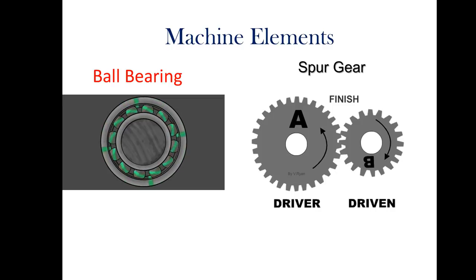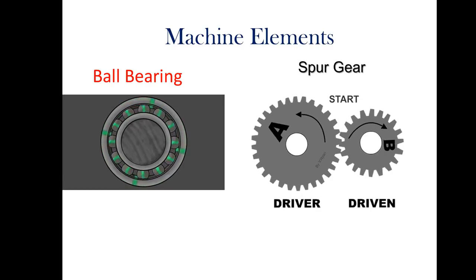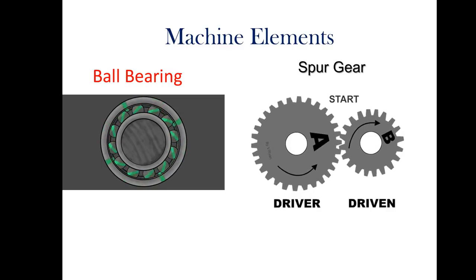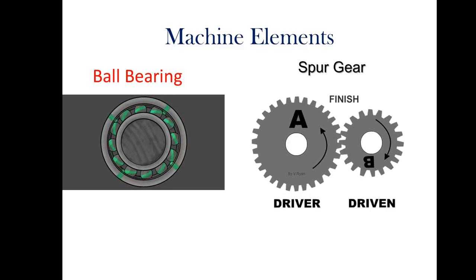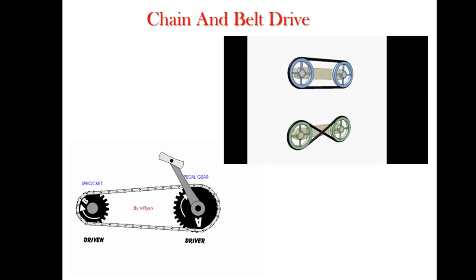Second part is ball bearing on left side. This ball bearing you might have seen in bicycles - it reduces the friction. So these are the very basic elements of mechanical engineering which we are going to discuss in the first unit, introduction to mechanical engineering.